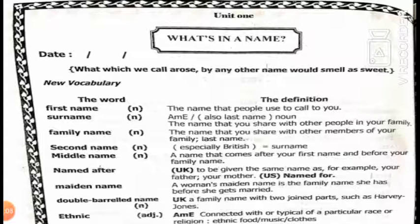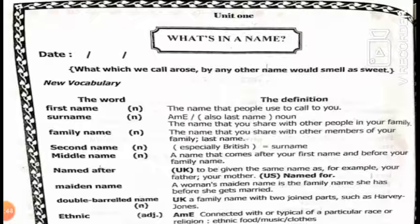A woman's middle name is the family name she has before she gets married — it's the name that she shares with other people in her family. A double-barreled name is a family name with two joined parts, such as Harvey-Jones, which a woman uses after she gets married.